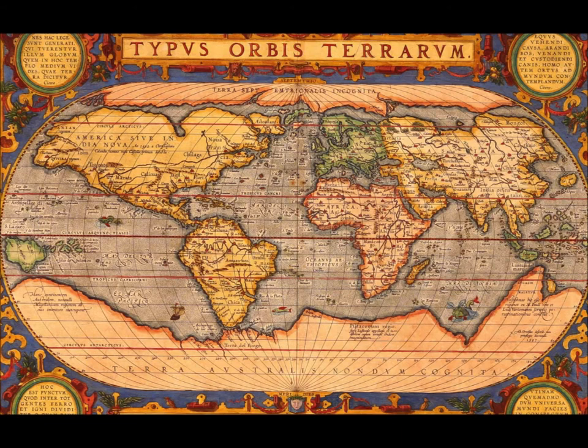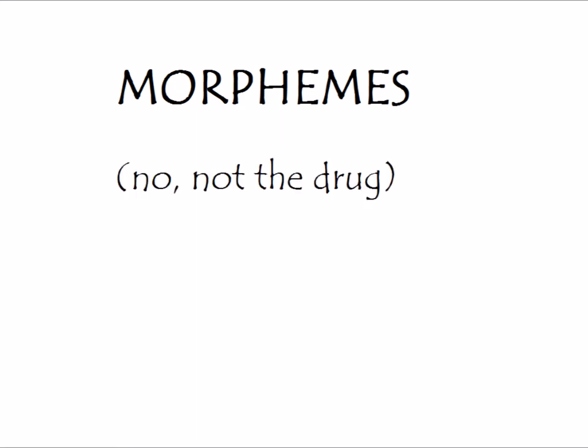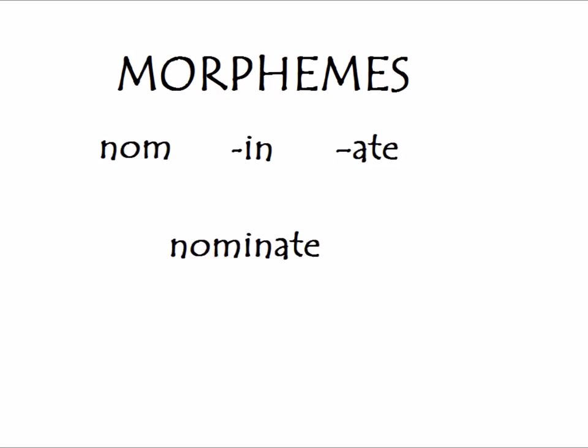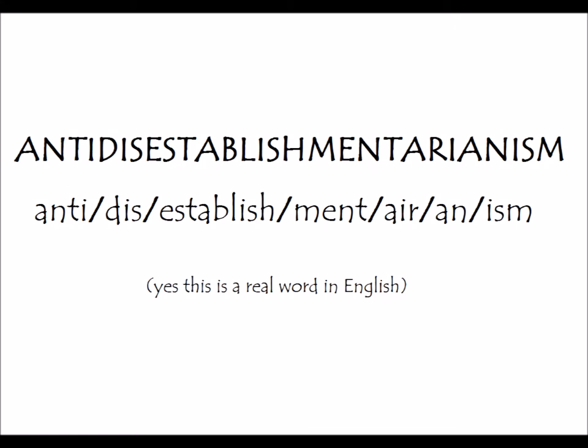To start off, the most basic unit to a language with meaning is a morpheme. Such root morphemes or affixes that have the most basic unit of meaning like nom, in, and ain't. Hey look, nominate. The word anti-disestablishmentarianism has seven morphemes. English borrows most of its morphemes from Latin and Greek.